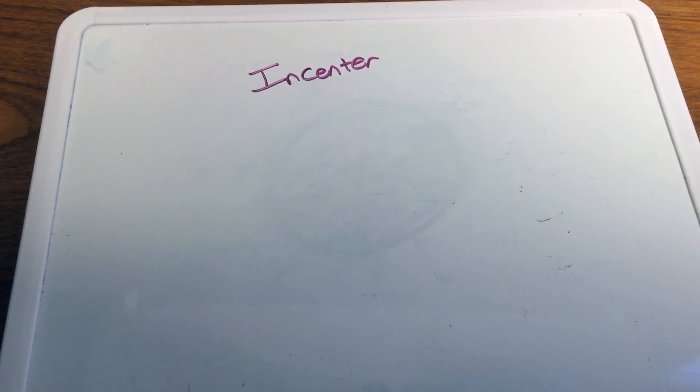Here we're going to make a video on the incenter of a triangle. Now, the incenter of a triangle is a point of concurrency, the point of concurrency of the three angle bisectors of a triangle.